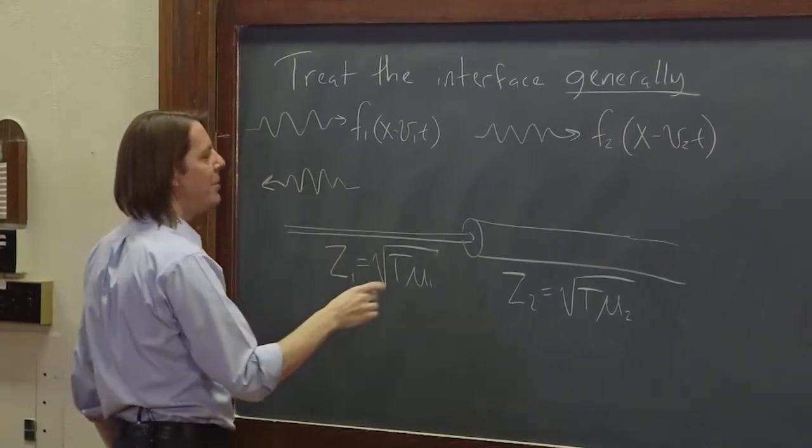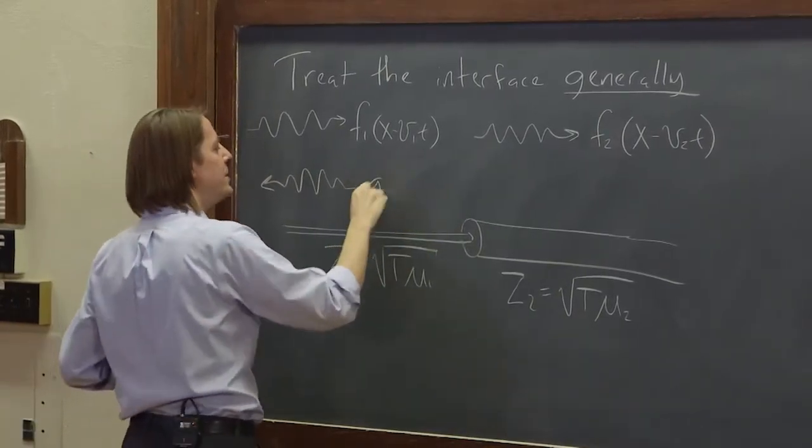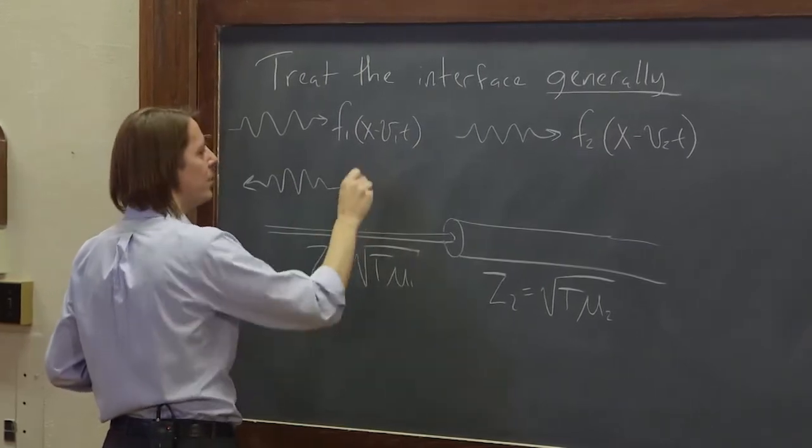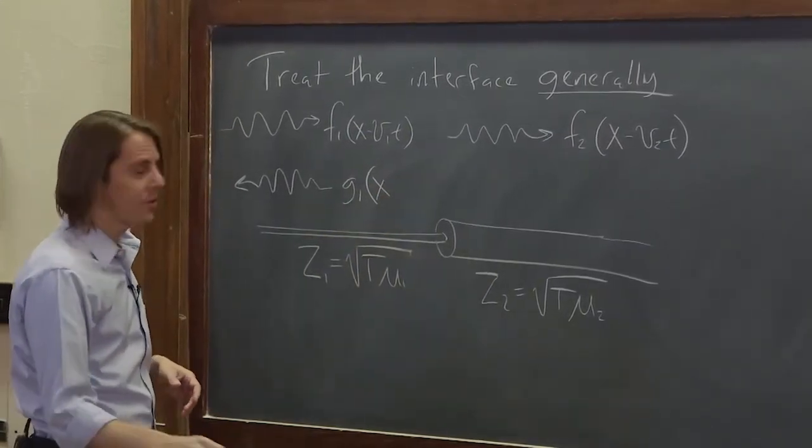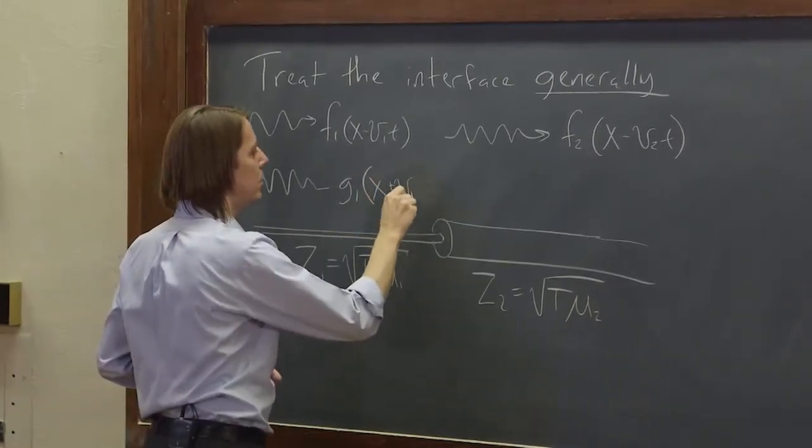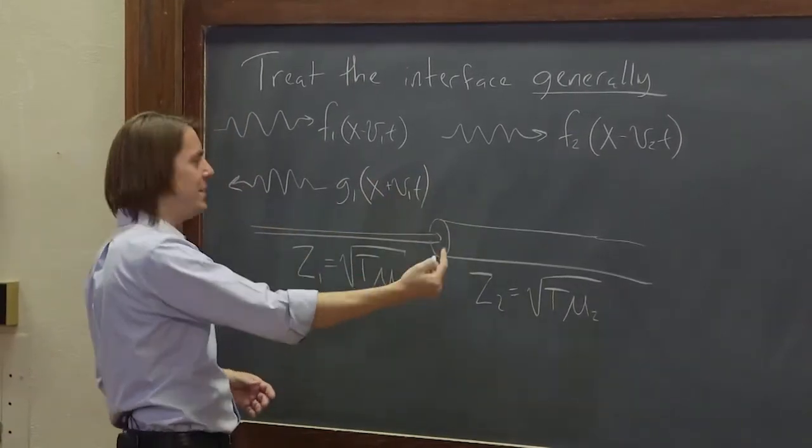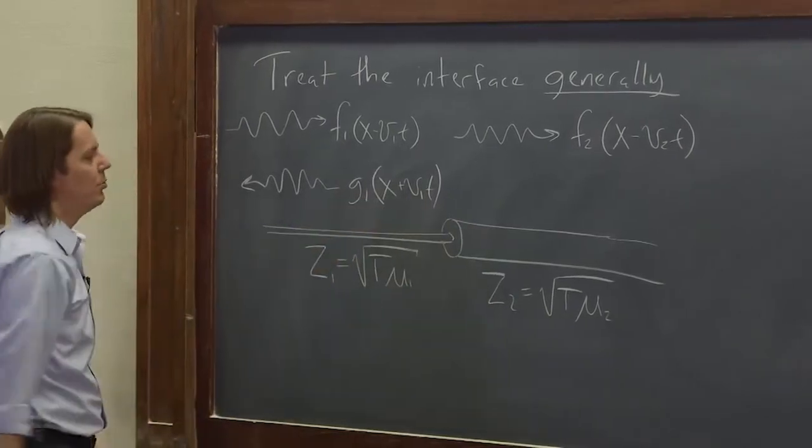You might get some little pulse shape. And for things going this way, we're going to call them g. And it's in medium one, so we're going to call it g1 of x. And then it's plus v1t, because it's going that way, right? g's go this way, that's why it would be plus.